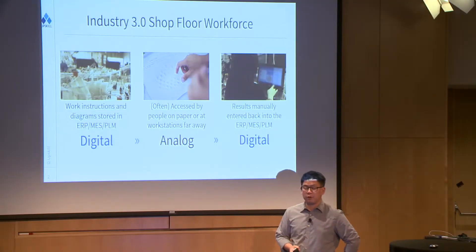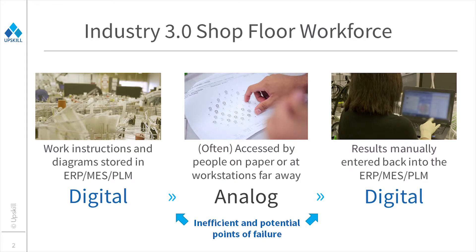A quick recap on what the Industry 3.0 shop floor workforce looks like today: you're typically dealing with work instructions and other kinds of digital information that is present within the enterprise IT infrastructure. All of that is in ones and zeros, and most of the information that people need — for a company like Newport News or GE or Boeing — resides in digital form somewhere within the digital enterprise. Where that transition takes over into the analog domain is when that information needs to be delivered to the technician or operator actually doing the work.